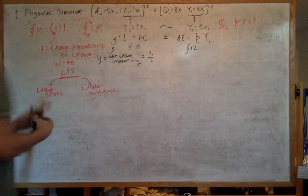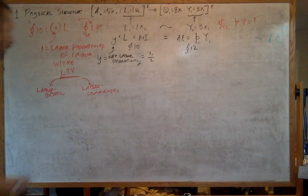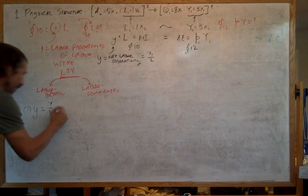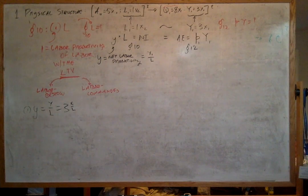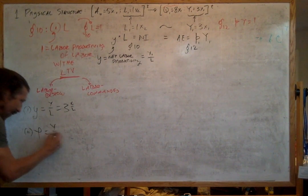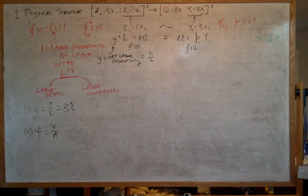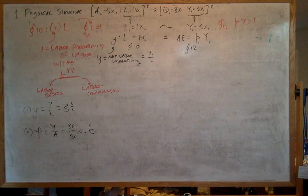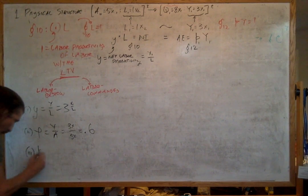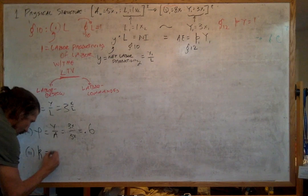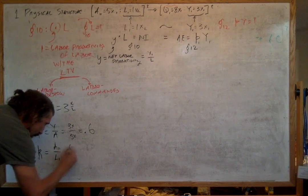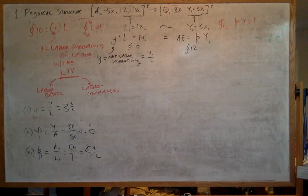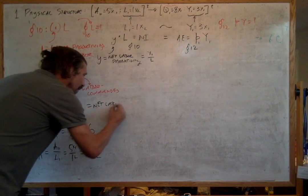We can express our physical structure of production in terms of the productivity parameters. The first productivity parameter is the net productivity of labor — equal to three-quarters per unit. The second is the net productivity of capital, or the net output-capital ratio — equal to 0.6, which also gives us the maximum rate of profit. The third is the capital-labor ratio, equal to the capital input over the labor input: five-quarters per labor. So we have net labor productivity, net capital productivity, and the capital-labor ratio.